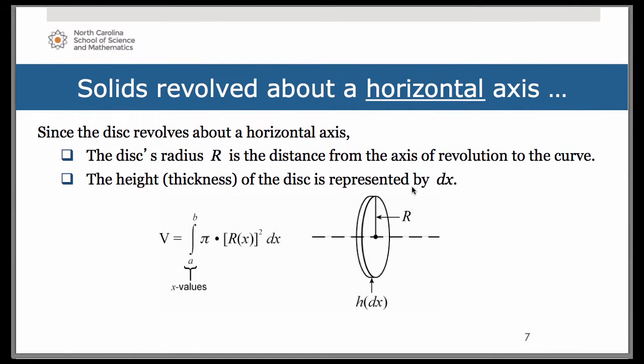Now depending upon the graph that you have, your representative rectangle could have different orientations, and this is also connected to the type of axis of revolution you have. Is it either horizontal or vertical? Now if you have a horizontal axis of revolution, such as the x-axis in the previous example...